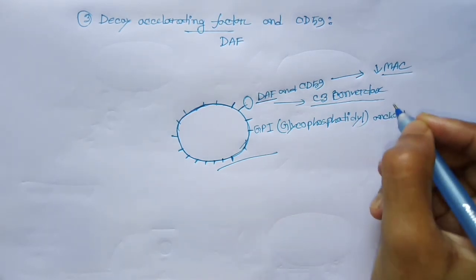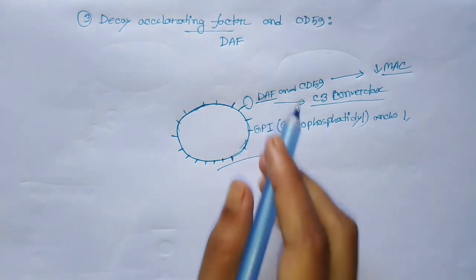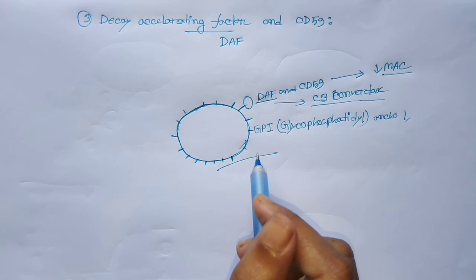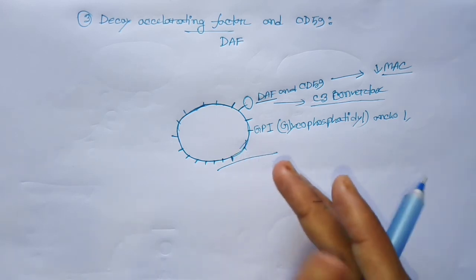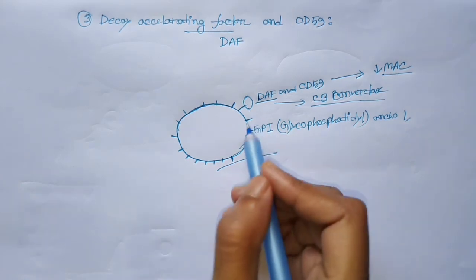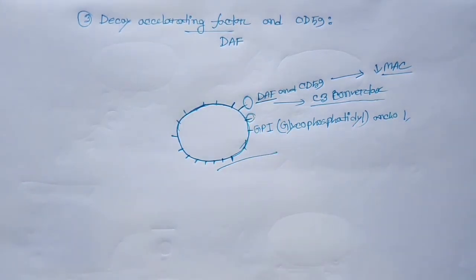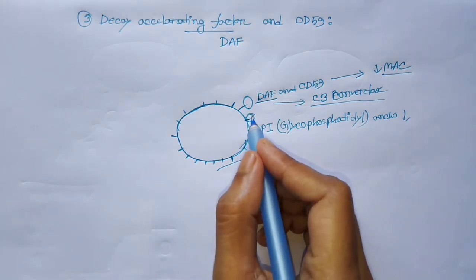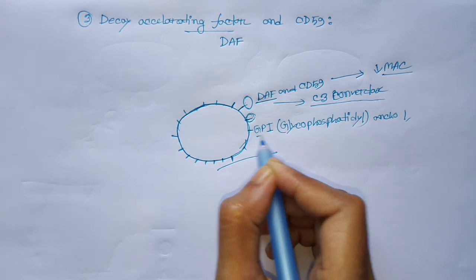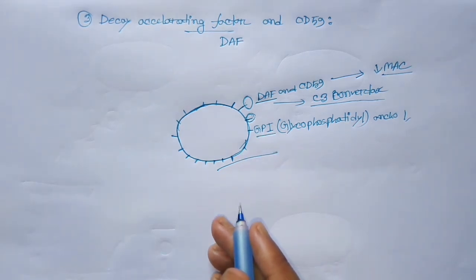By this mechanism, our own cells — like red blood cells, platelets, and leukocytes — protect themselves from the complement system. Now, what will happen if this anchor protein GPI is absent on the plasma membrane?